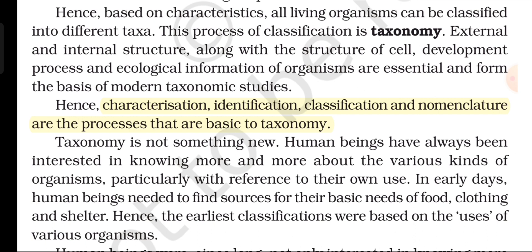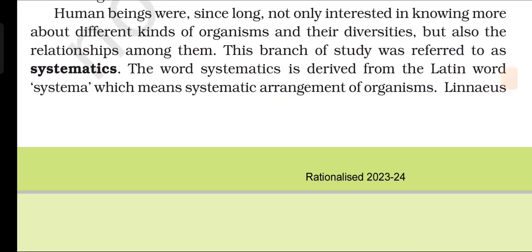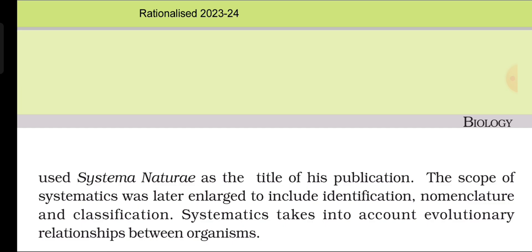Human beings were long interested not only in knowing more about different kinds of organisms and their diversities, but also the relationships among them. This branch of study was referred to as systematics. The word systematics is derived from the Latin word systema, which means systematic arrangement of organisms. Linnaeus used Systema Naturae as the title of his publication. The scope of systematics was later enlarged to include identification, nomenclature, and classification. Systematics takes into account evolutionary relationships between organisms.